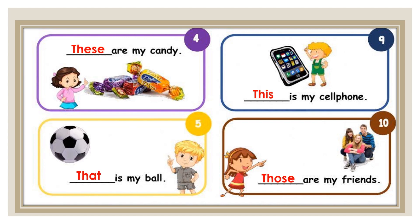Let's see the answers. 'These are my candy' — many, near. 'This is my cell phone' — one, near. 'That is my ball' — one, far. 'Those are my friends' — many, far.